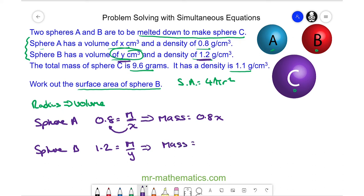If we combine these two masses together when they are melted down, it will make the mass of sphere C. So 0.8X for sphere A plus 1.2Y for sphere B will have a total mass of 9.6 grams. This is one of our simultaneous equations.